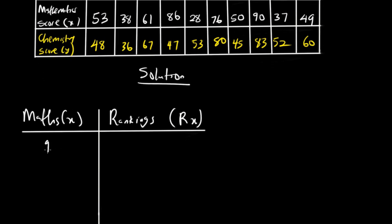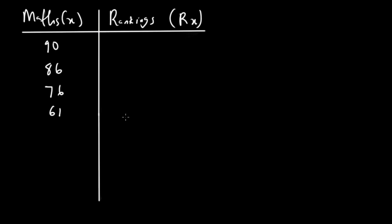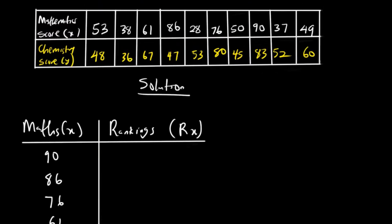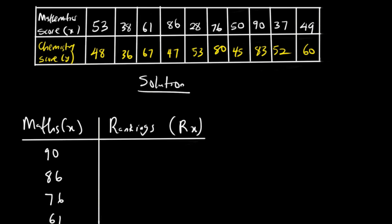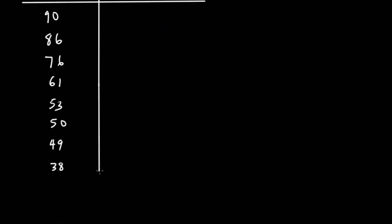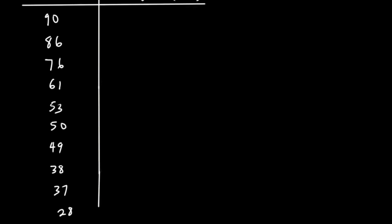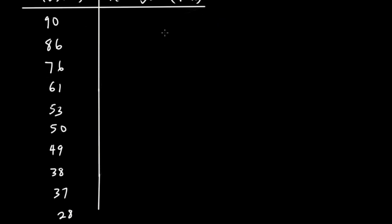the mathematics scores in descending order are: 90, 86, 76, 61, 53, 50, 49, 38, 37, and 28. I'm going to rank them from first to last: 1, 2, 3, 4, 5, 6, 7, 8, 9, 10.